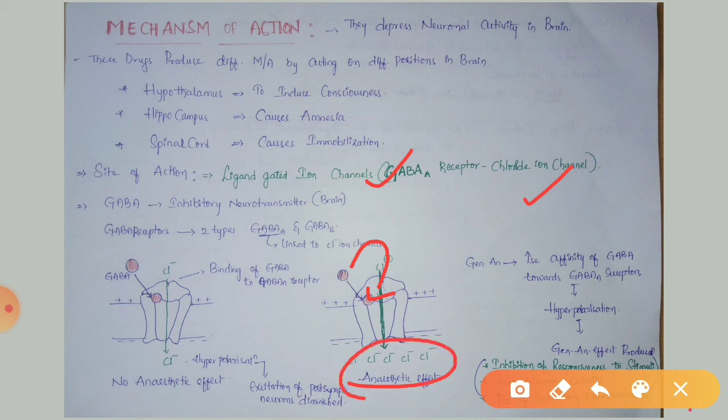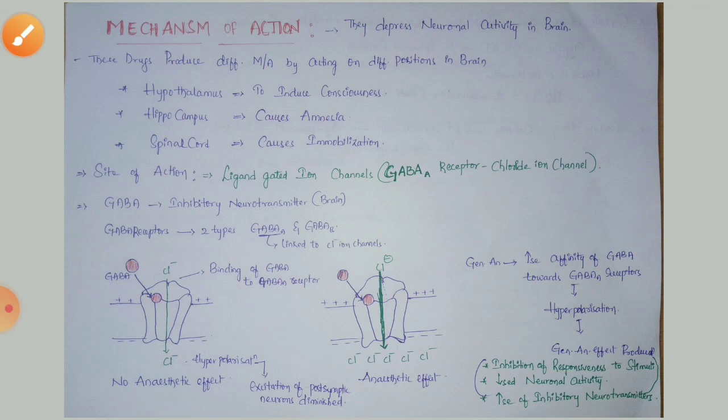This creates hyperpolarization and finally diminishes the excitation of the post-synaptic neuron continuously, producing the general anesthetic effect. Various general anesthetic effects can be produced: inhibition of responsiveness to stimuli, decreased neuronal activity, and increased inhibitory neurotransmitters.